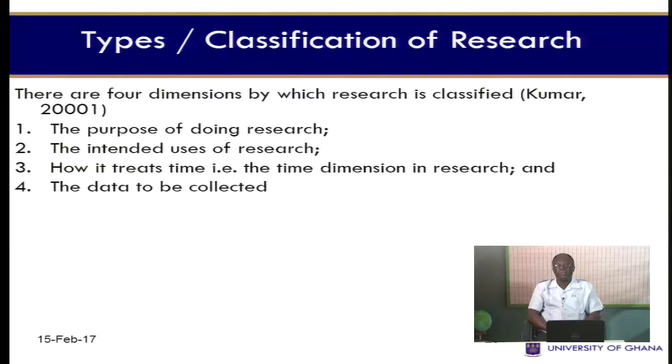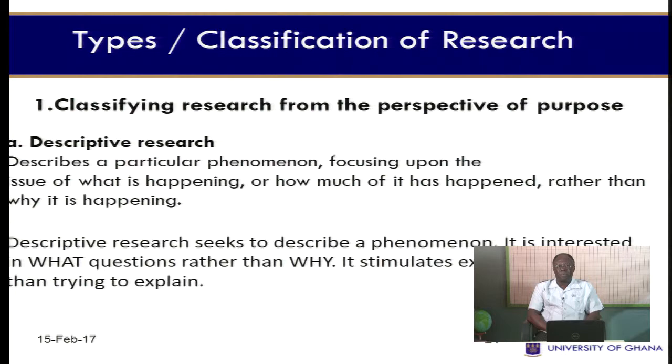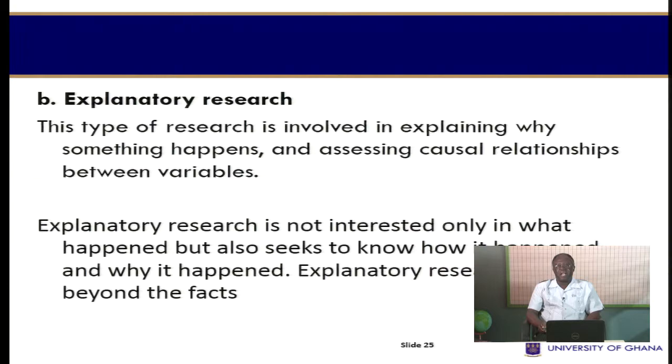Let's move on to types and classification of research. There are four dimensions by which research is classified, as given by Ranjit Kumar. These are: the purpose of doing research, the intended uses of research, how it treats time — that is, the time dimension in research — and then the data to be collected. Let's consider the first classification, that is from the perspective of purpose. Under this classification we have descriptive research, exploratory research, and explanatory research. What is descriptive research?